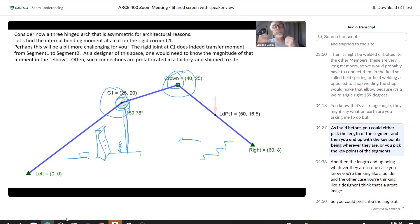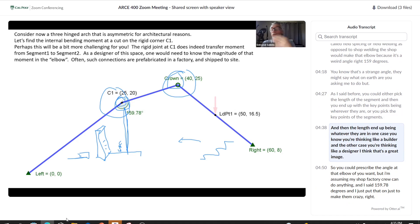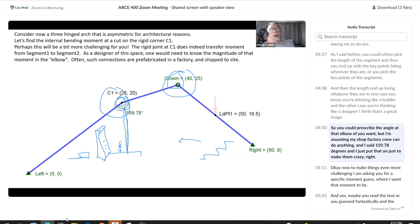As I said before, you could either pick the length of the segment and then you end up with the key points being wherever they are, or you pick the key points of the segments and then the lengths end up being whatever they are. In one case you're thinking like a builder and the other case you're thinking like a designer. You could prescribe the angle at that elbow if you want, but I'm assuming my shop factory crew can do anything and I said 159.78 degrees.